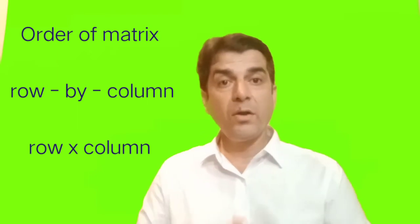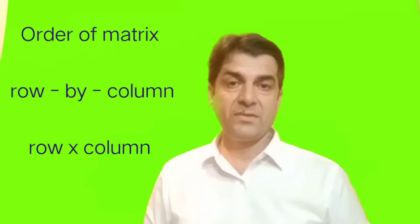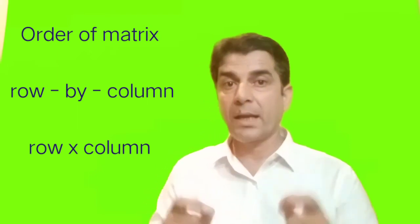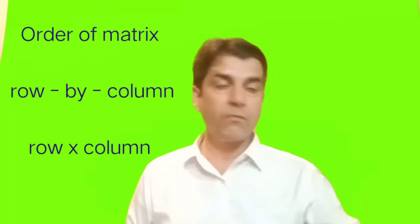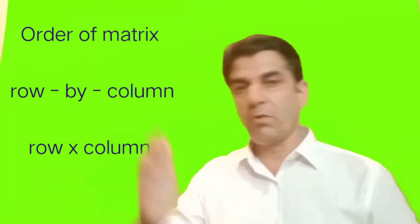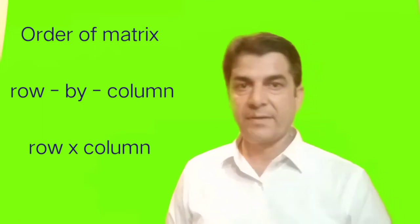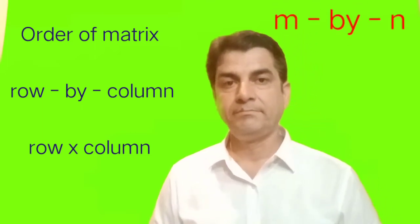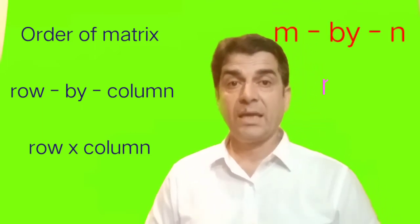So the order of matrix is always written as row by column. If there are m number of rows in our matrix and n number of columns, then the order of matrix will be m by n. We can write it as m cross n also.